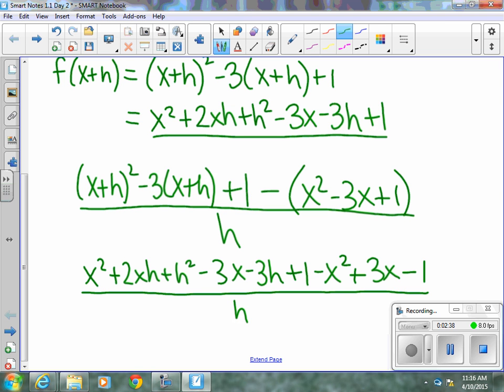From here, that h that we have in the denominator should always cancel out. So, for that to happen, anything in the numerator that does not have an h should go away if we did our algebra correctly. So, our x squared and our negative x squared should go away. Our negative 3x and our positive 3x. Our 1 and our negative 1 should all go away. And they do.